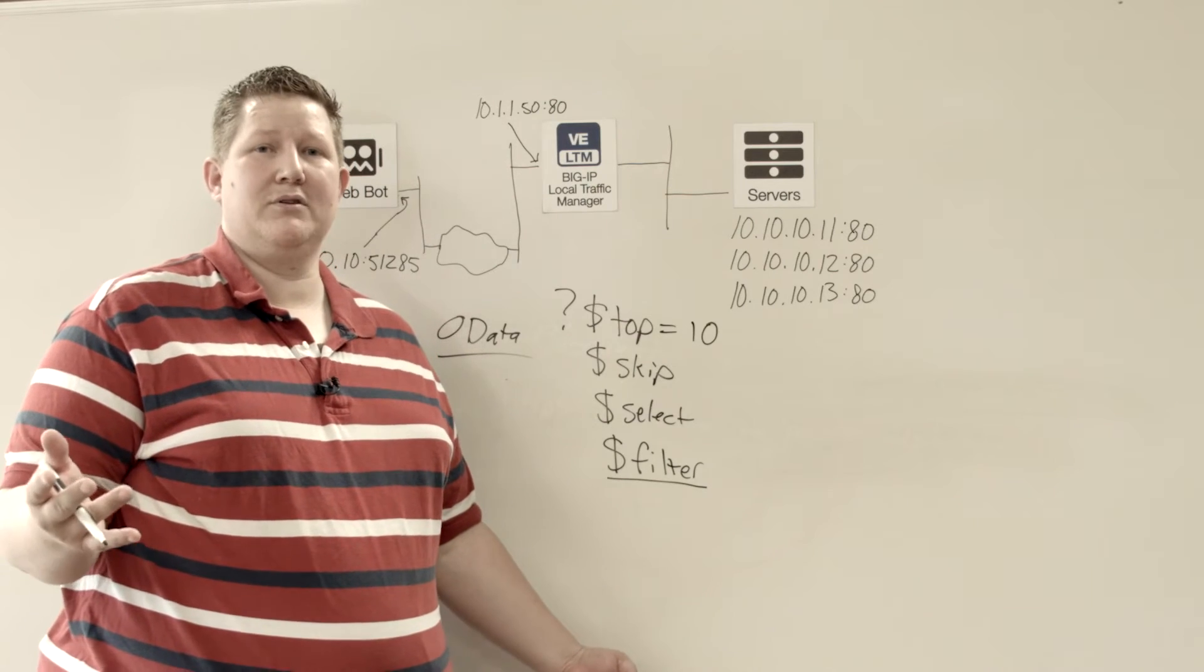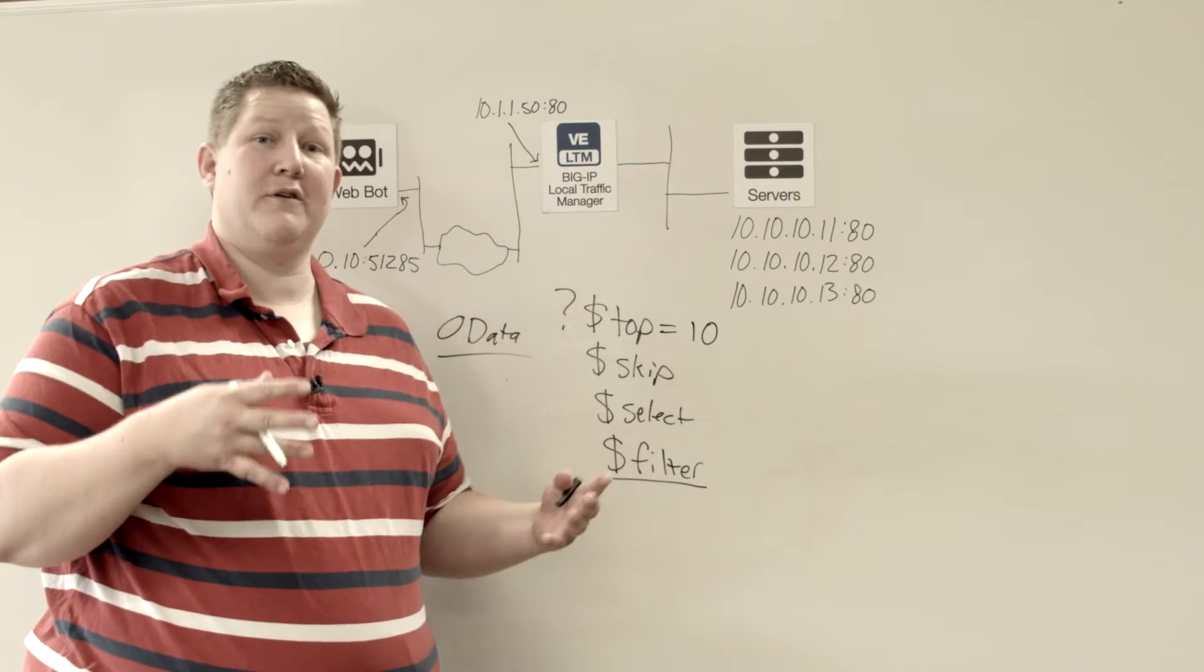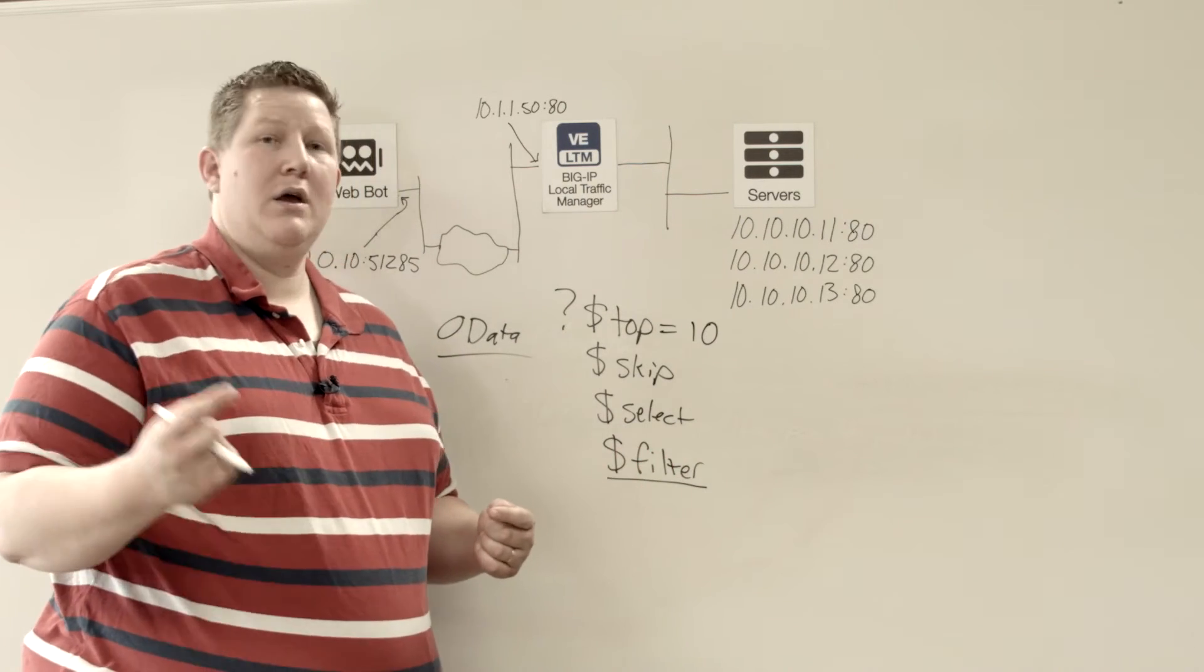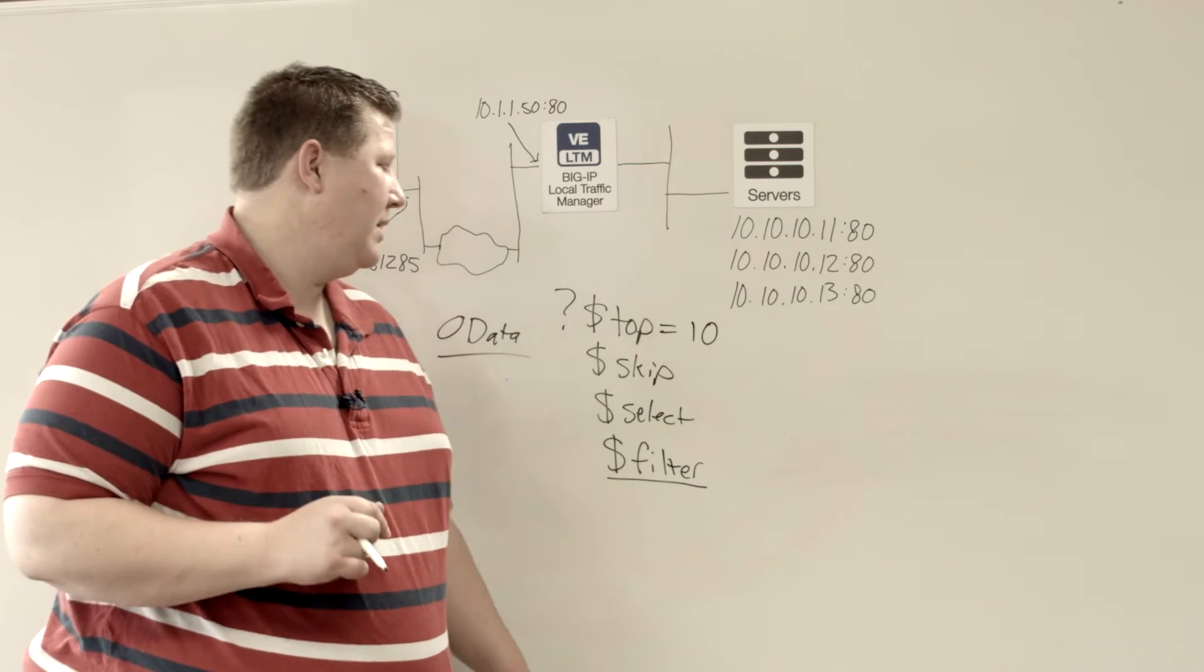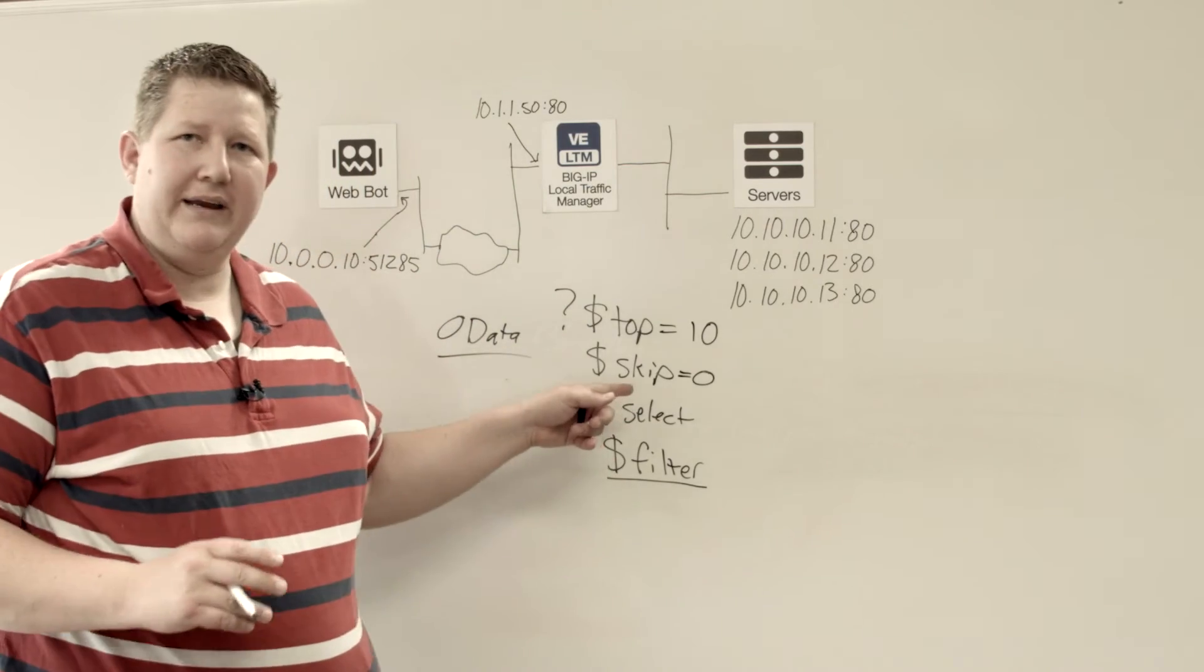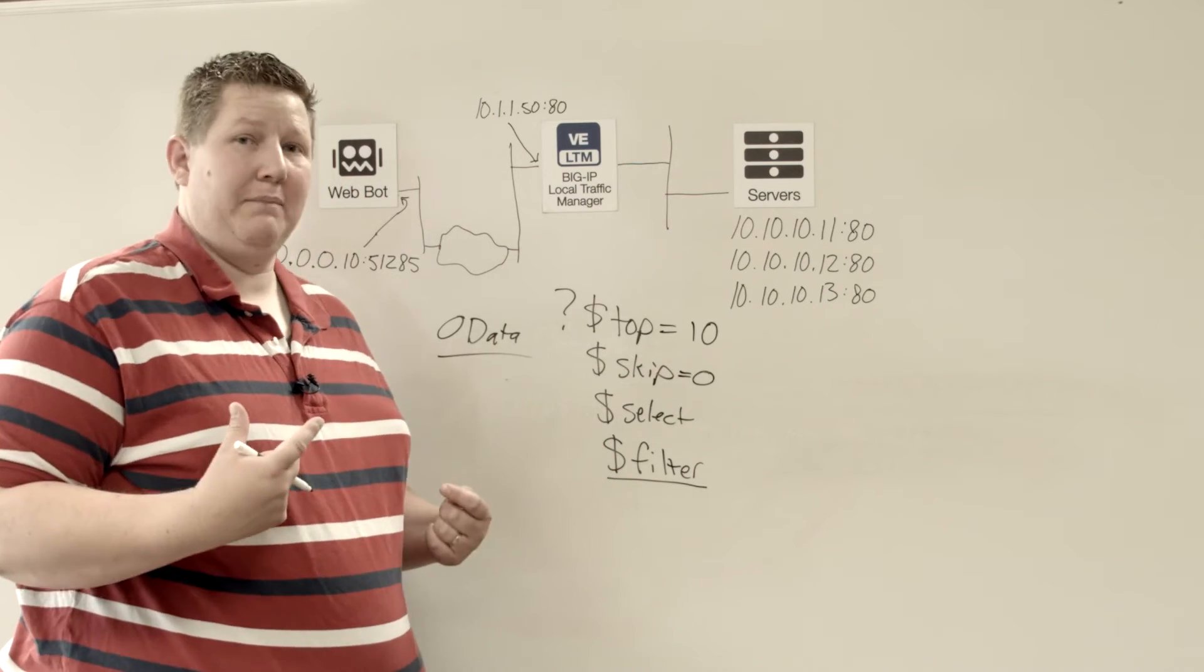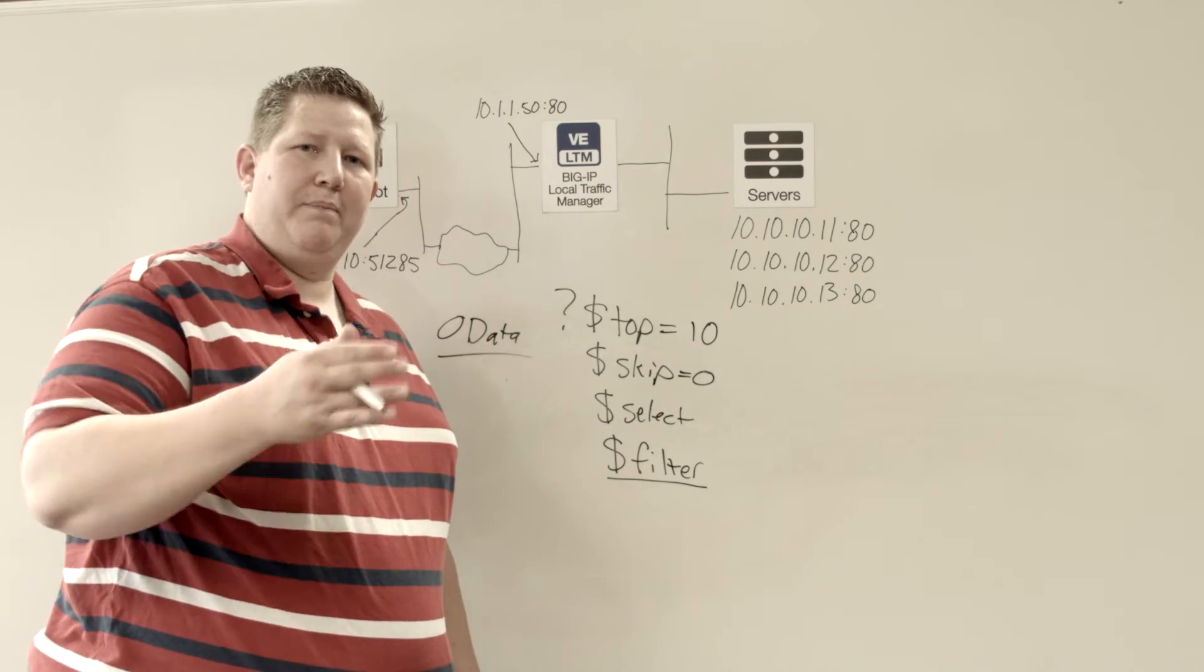So if you have 150 pools defined, and you put a query parameter of top 10, it's going to give you the first 10. And when it does that, it's going to also send you how many total items are in that collection, how many were returned in this result, and then also a skip parameter. And what that does is that skip is assumed zero if you don't provide it.